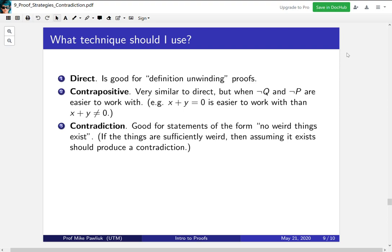Finally, contradiction. Proof by contradiction is good for statements of the form 'no weird things exist.' The idea is that if things are sufficiently weird, then assuming that thing exists should produce a contradiction. For example, in the proof that there is no number that is both even and odd, that would be very weird if there existed a number that was both even and odd, and it's so weird in fact that it produces a contradiction.